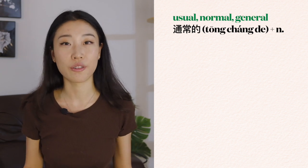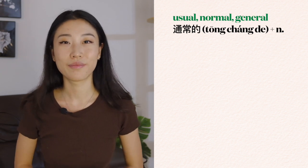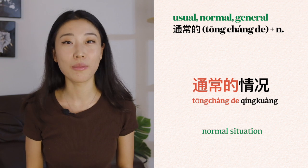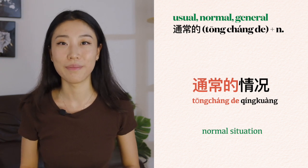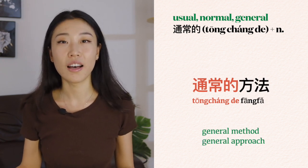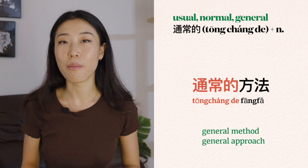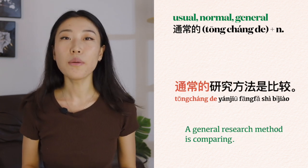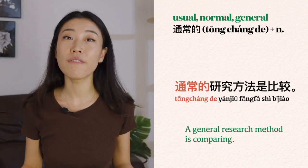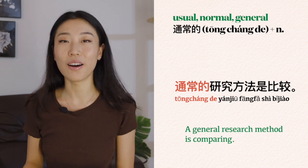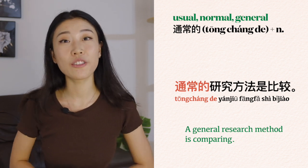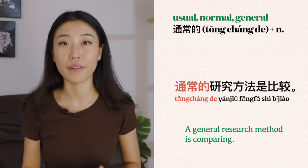We can also say 通常的, which means normal, usual, or general. For example: 通常的情况 — a normal situation. 通常的方法 — a general method.